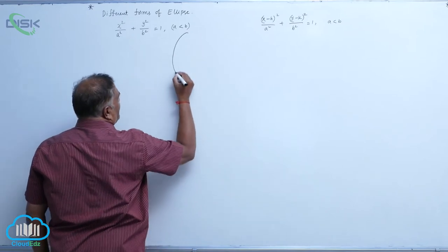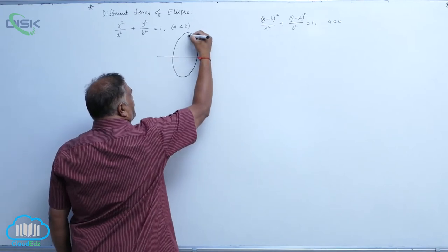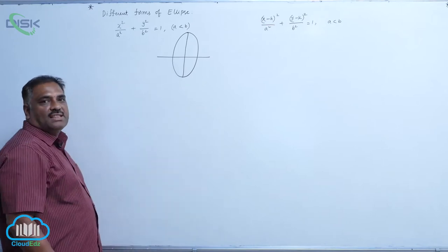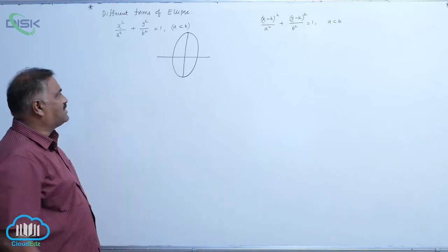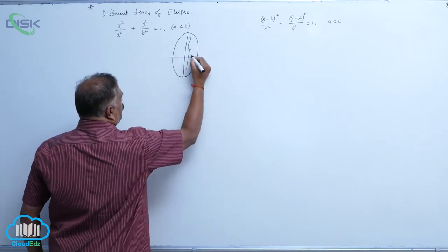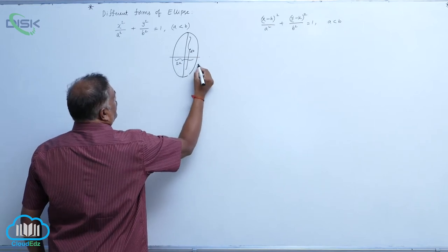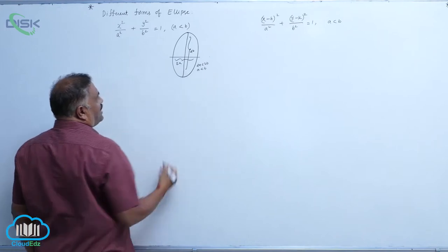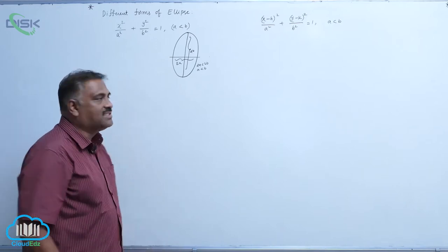Why is it a vertical ellipse? You know that this is called the major axis and this is called the minor axis. The length of the minor axis is less than the length of the major axis. Here, clearly this is 2b and this is 2a. That is why 2a < 2b means a < b. That means the original horizontal ellipse is rotated by an angle of 90 degrees.